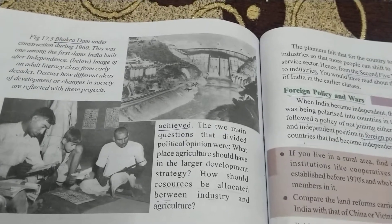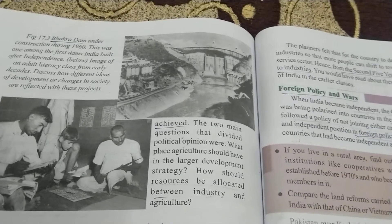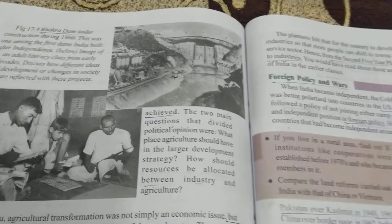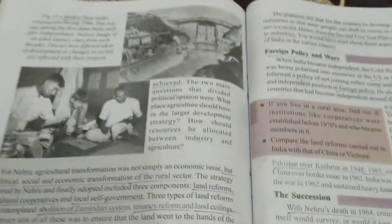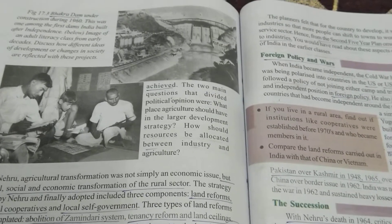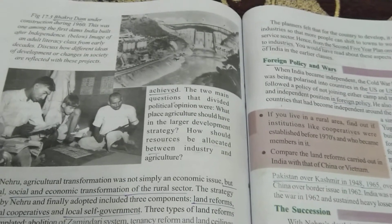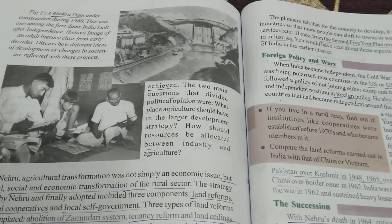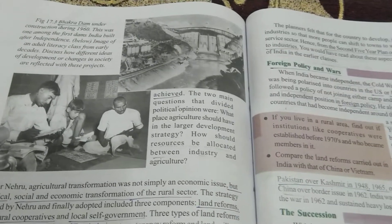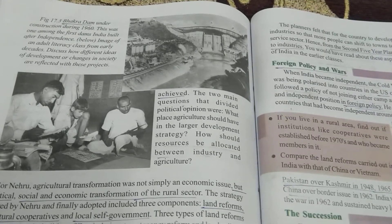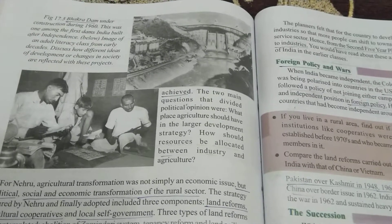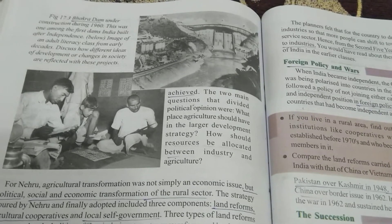Under tenancy reform, the government wanted to give rights to tenants as well. Most farmers were tenants who took lands from zamindars or landlords and cultivated them. Land ceiling means people should not hold more land than the prescribed limit. According to land ceiling, 70 to 90 acres of land could be held by each farmer. If anyone held more than that limit, they had to hand over the excess land to the government.